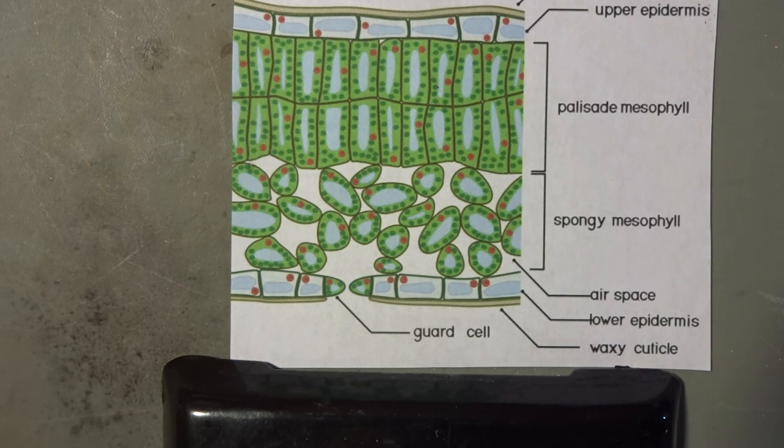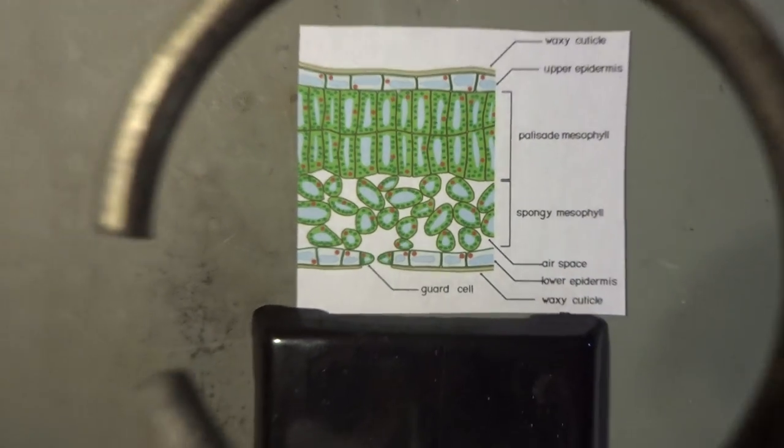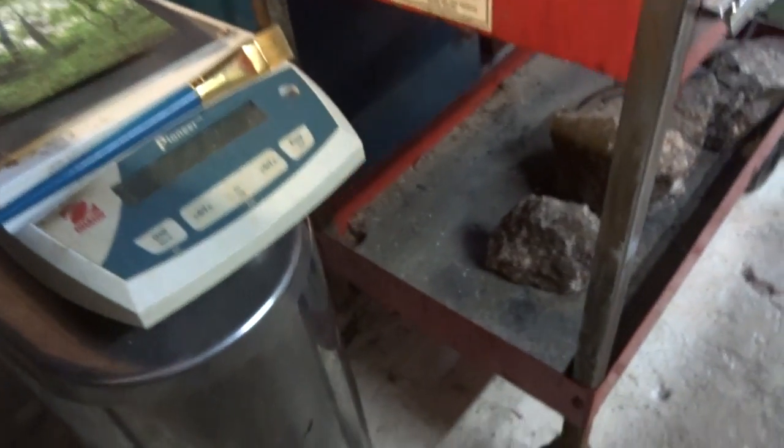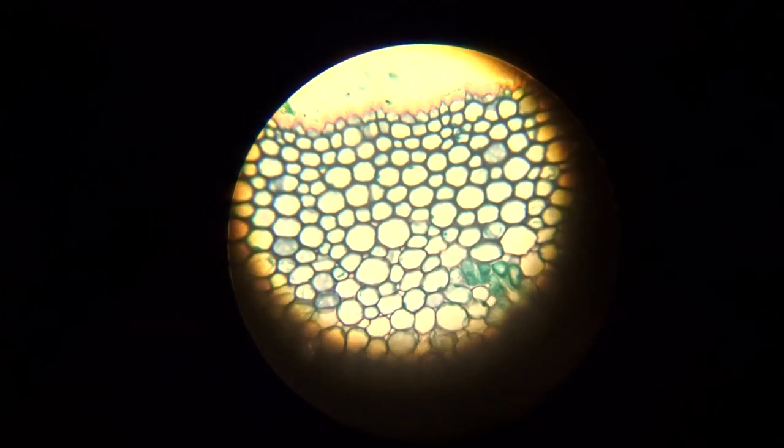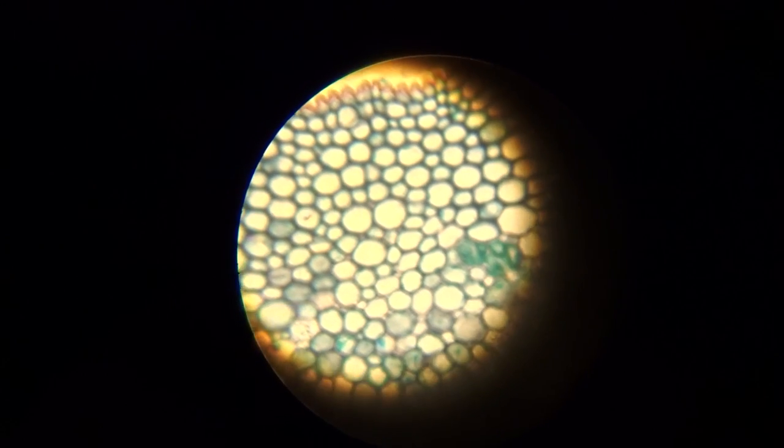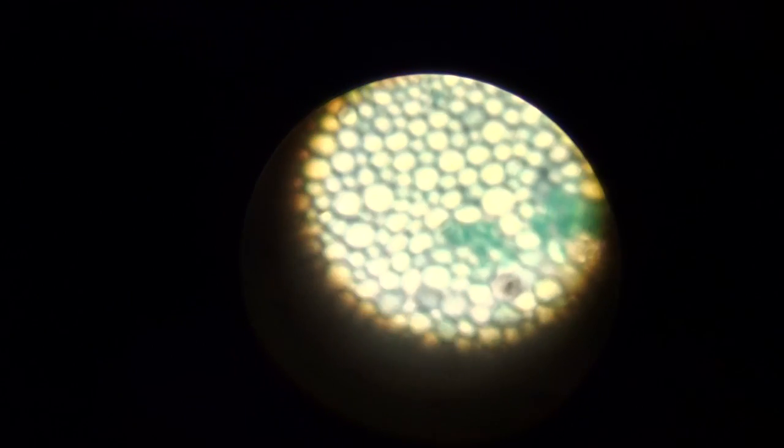Let's look at the cross-section of a leaf under the microscope. Let's go. Here we are. This is on 430 times magnification of the leaf under the microscope — high power. I'm going to switch to lower power and focus in on the cells again.